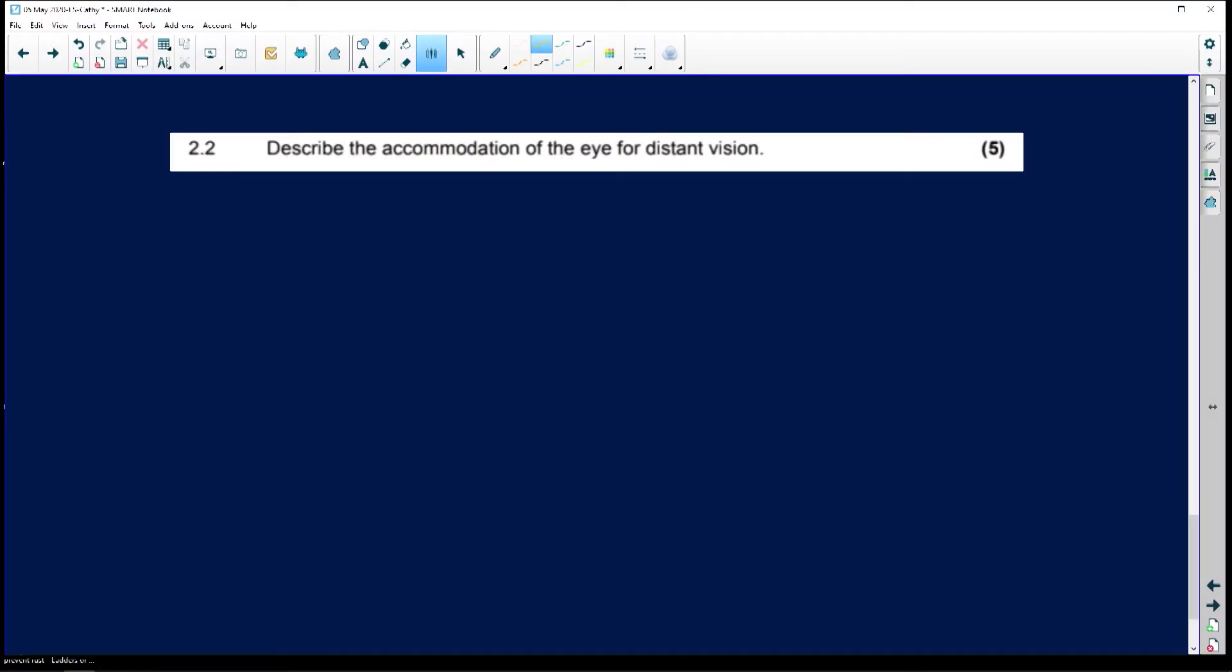Without much further ado, here we go. We're going to carry on from where we left off last week. It says describe the accommodation of the eye for distant vision.